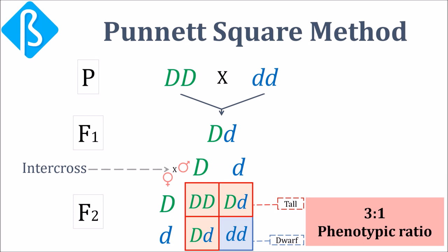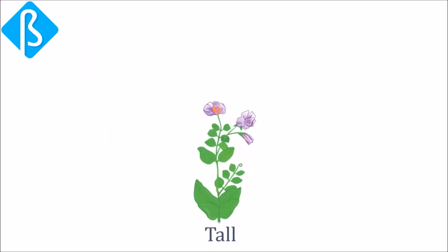Here we have predicted the outcome of the generation when the parental genotype as well as phenotype is exactly known. But what if you have a strain of plant which has known phenotype but unknown genotype, and you are not familiar with its parental strain genotype as well?